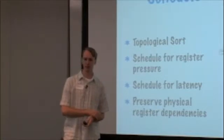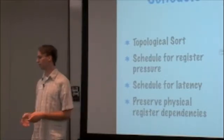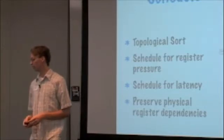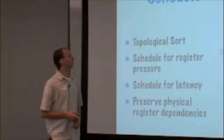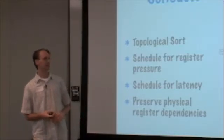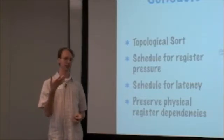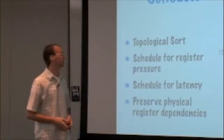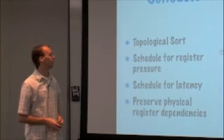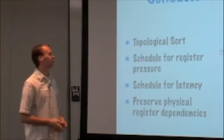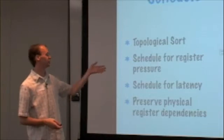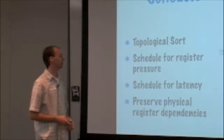Another thing that the scheduler has to worry about that's not obvious from the graph is physical register dependencies. So in this example here, there's a multiply node. On x86, the multiply instruction explicitly reads the EAX register and the EDX register. And those are things that we can't easily represent in a dependency graph. So those are extra information that's not shown here that the scheduler has to keep in mind.